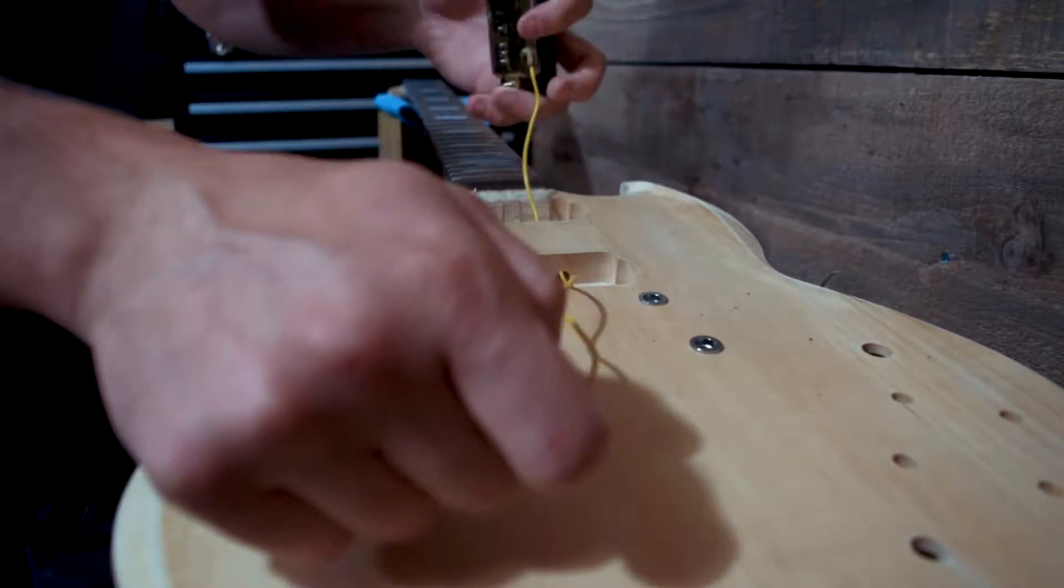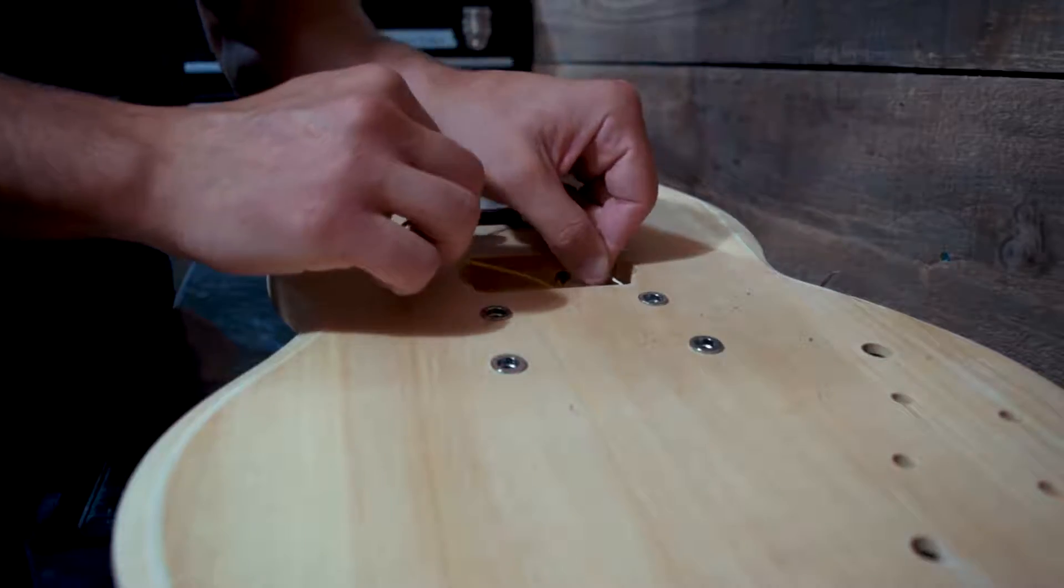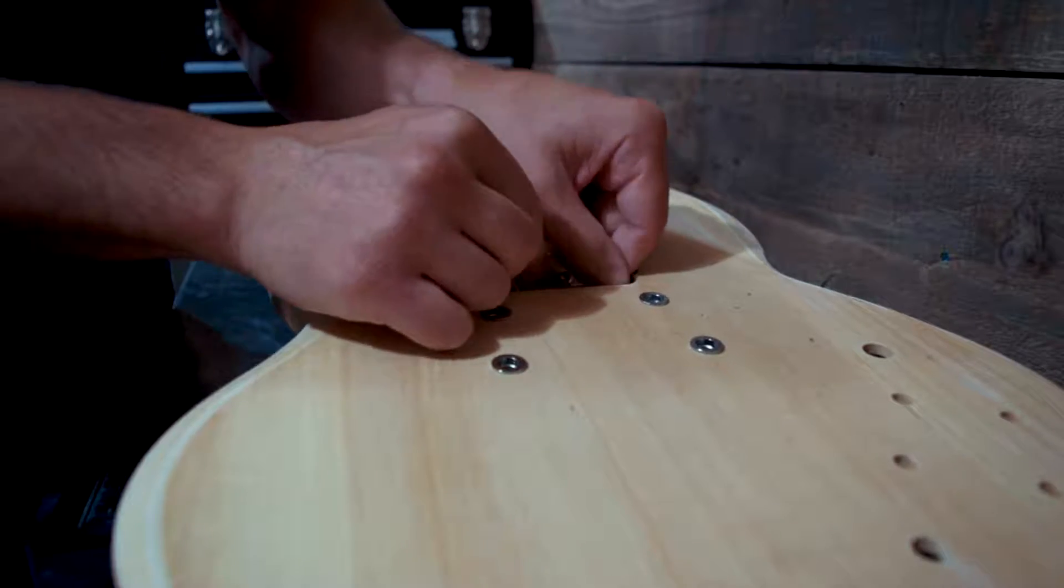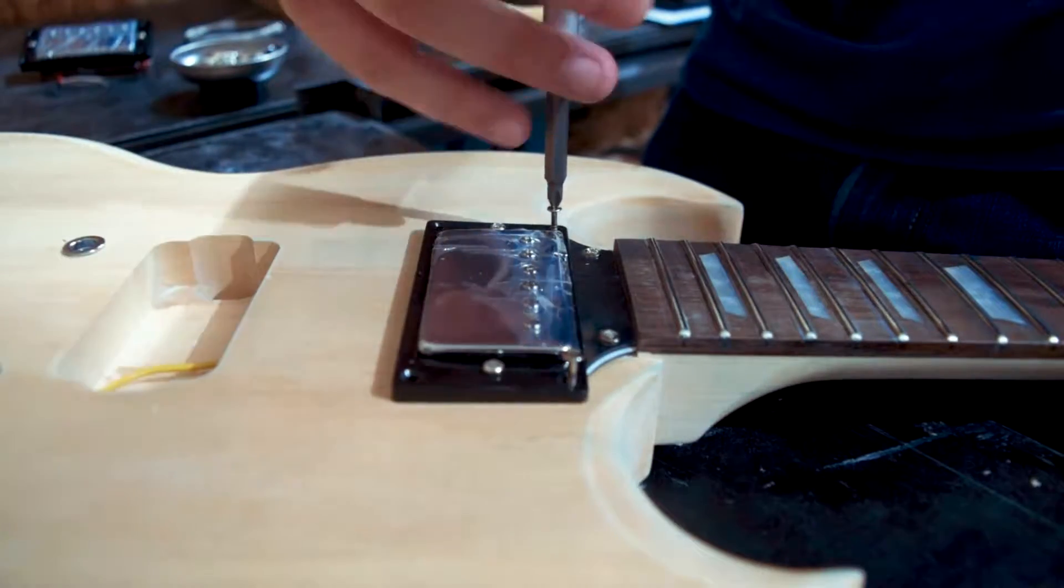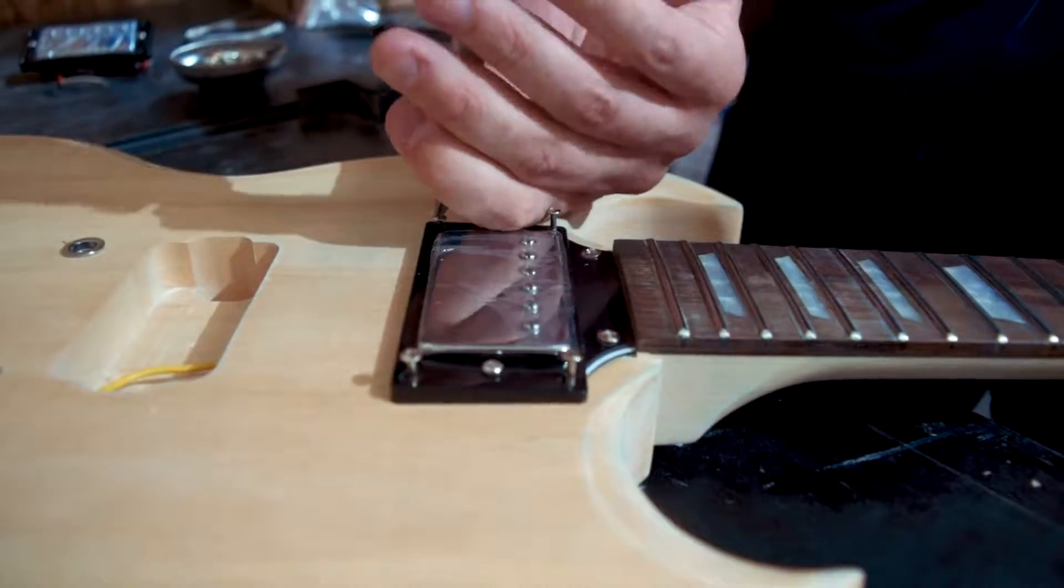Next I get the neck pickup positioned so that I can run the wires through without having the bridge pickup in the way. And I like to go ahead and get that screwed in place right away so that I don't have to worry about it falling out when I flip the guitar over.